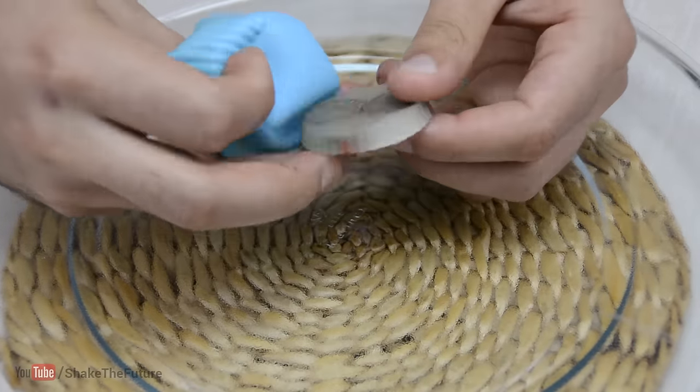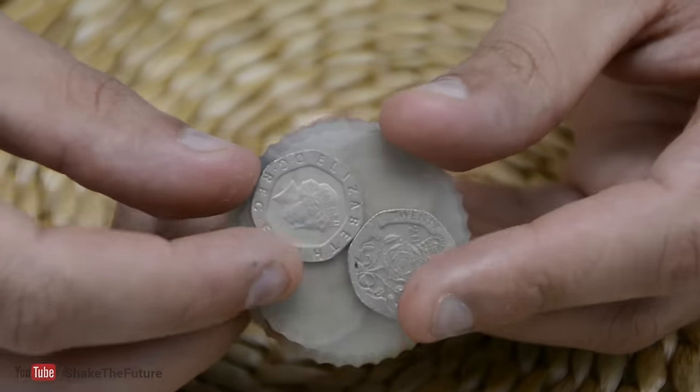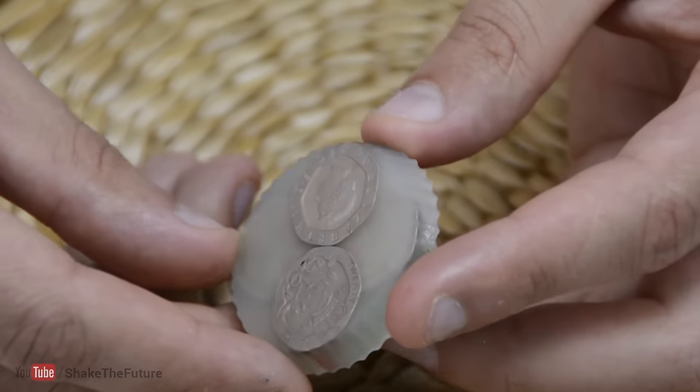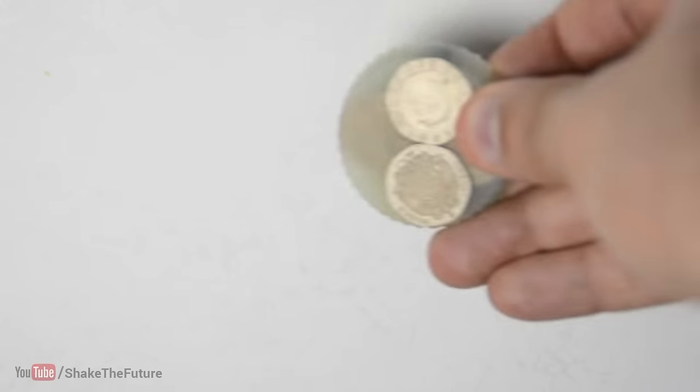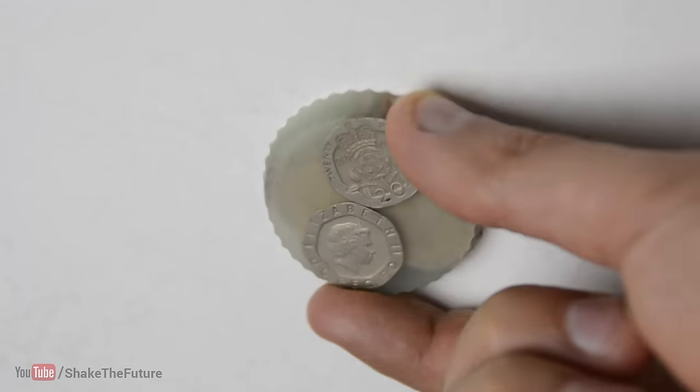Remove it from the mold. You have made a custom fridge magnet. You can put almost anything inside of the glue.